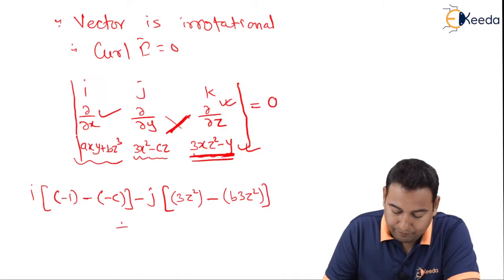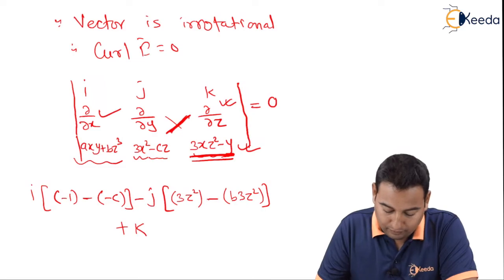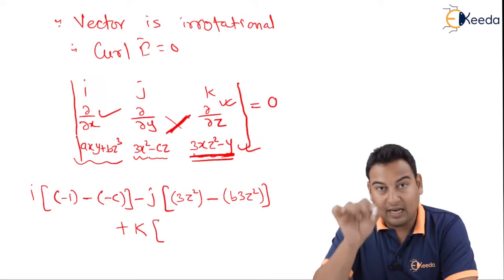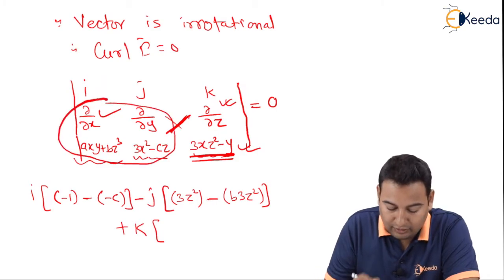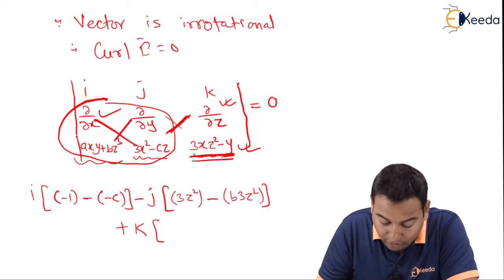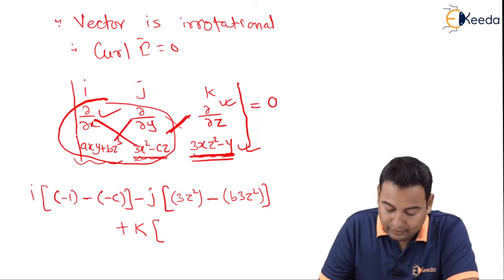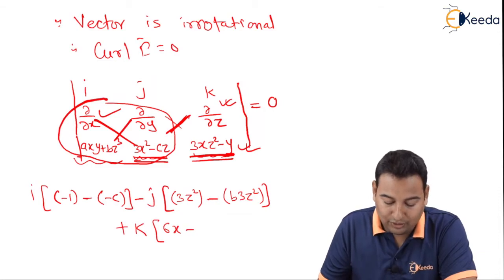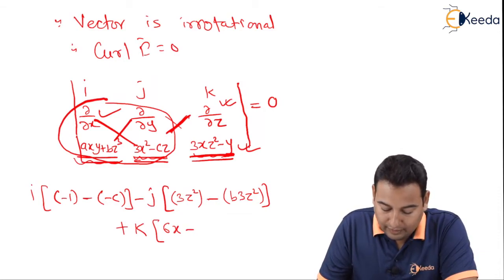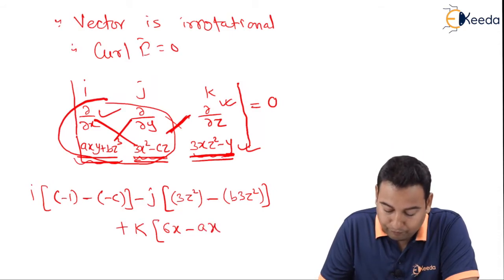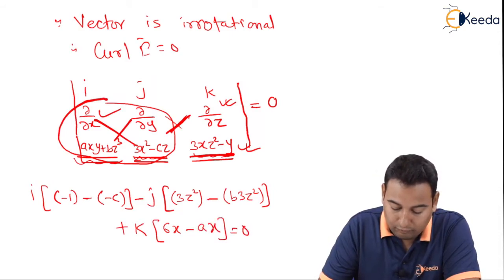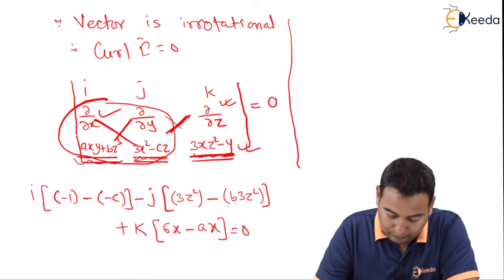Plus k. I'm going to leave the last column and the first row. These are the terms. Del by del x of this particular term, that is 6x only, minus del by del y of this term, that is ax. Bz cubed is constant, 0.